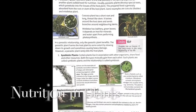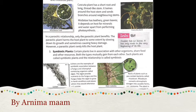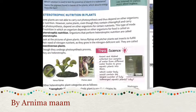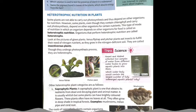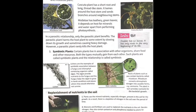Yesterday we started Class 7 Chapter 11, that is Nutrition in Plants. Yesterday we covered heterotrophic nutrition in plants, including saprophytic plants. Now we continue with heterotrophic nutrition and move to the next type: parasitic plants.